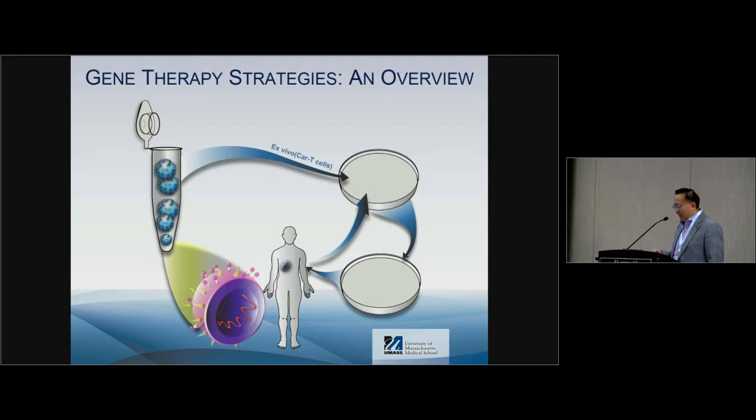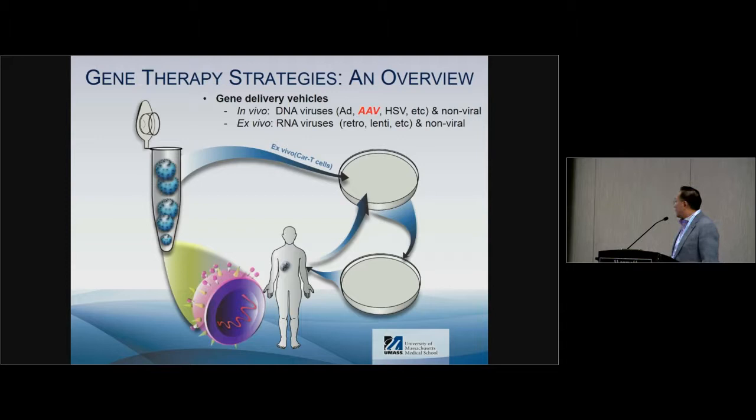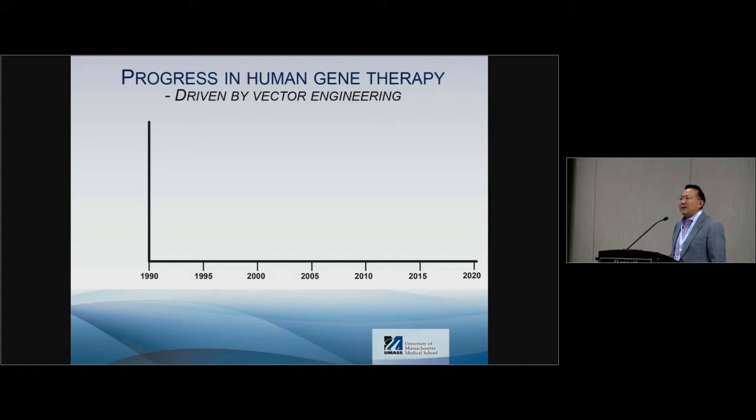The key for both strategies, as you can see, is the vector. For in vivo use, we have used adenovirus, herpes, AAV, and non-viral vectors. Today's topic is going to focus on AAV. For ex vivo use, we have used RNA viruses, lentivirus, and retrovirus.